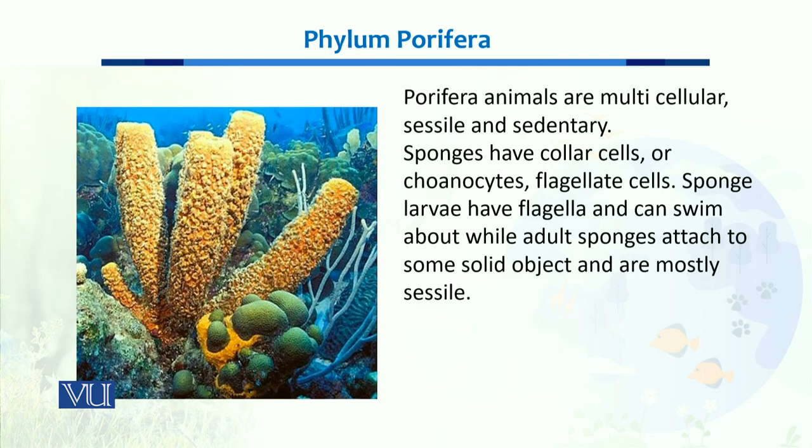These collar cells are called coenocytes, and they are flagellated cells. The larvae have flagella and they have the ability to swim. While the adult sponges remain attached to some solid object and stay sessile for the rest of their life.